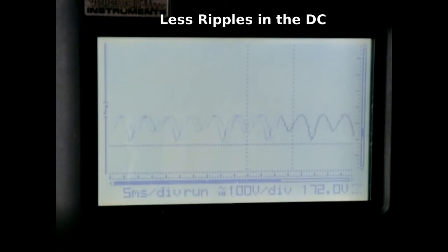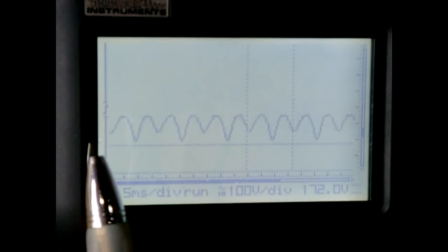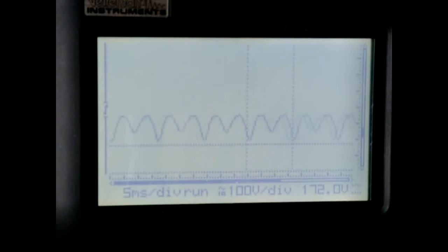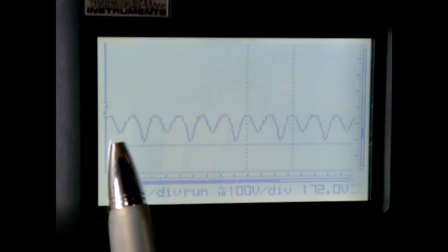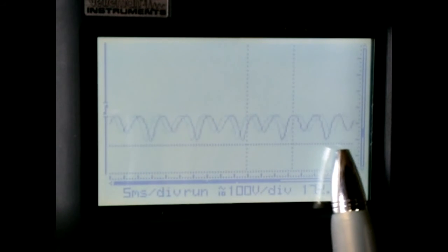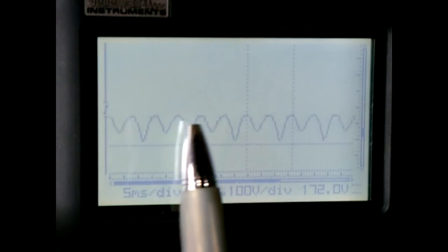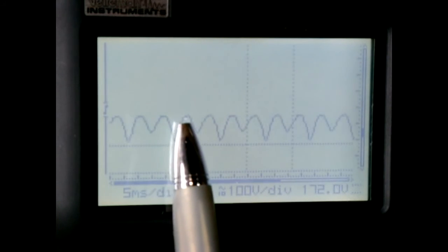So I'm going to do now is I'm going to apply a capacitor to the circuit, and you're going to see all of these peaks that drop down towards the zero line, they're going to be gone because the capacitor is going to prevent all these drops. It's going to keep the voltage up towards the top.